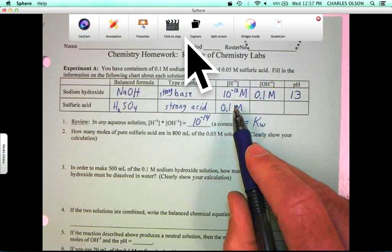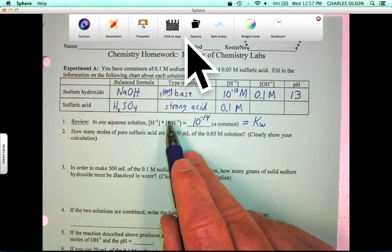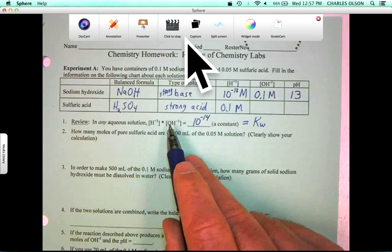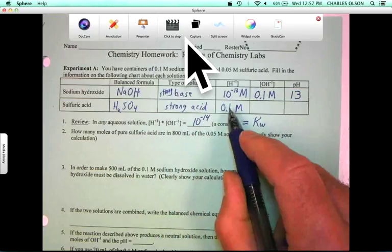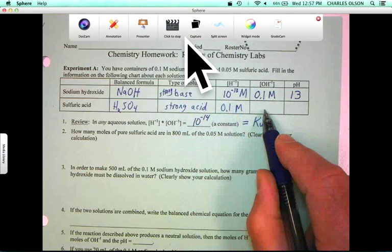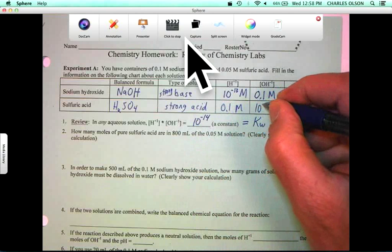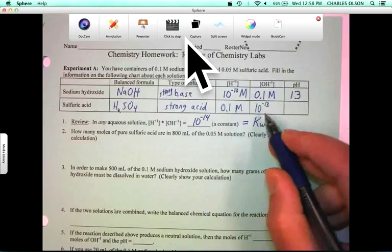And since the product of the concentration of H plus times concentration of OH minus is 10 to the minus 14, we can deduce 10 to the minus 1. This has to be 10 to the minus 13, the concentration of OH minus, 10 to the minus 13 molar.